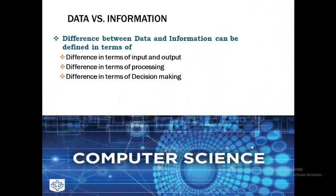The difference between data and information can be understood from the perspective of input and output, from the perspective of processing, and in terms of decision making. I will try to explain each with an example so that you are able to understand things well.